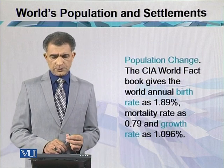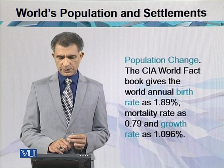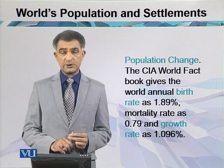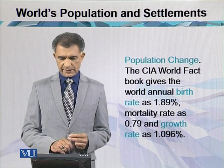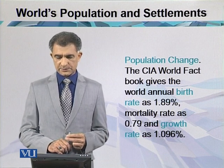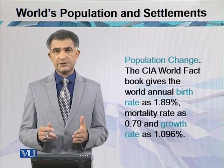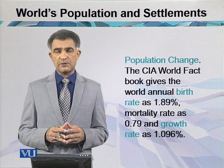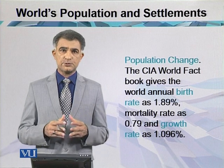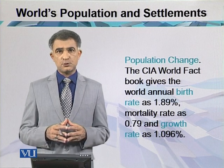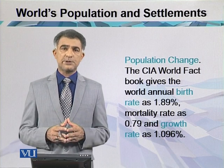According to the CIA World Factbook, the world annual birth rate is 1.89%, mortality rate is 0.79%, and growth rate is 1.096%. Population change in any country is because of its births and deaths — when we subtract deaths from births, that gives us the actual growth of the area.